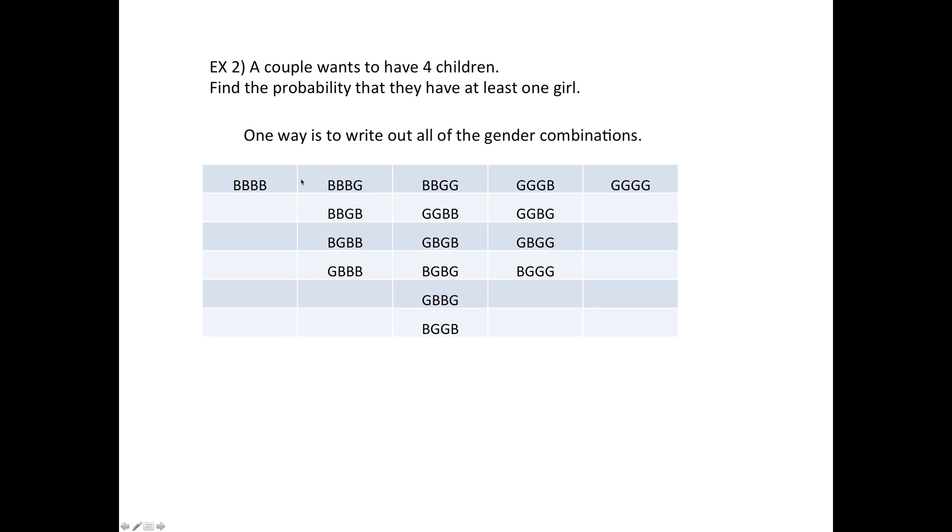Here they are. So here they are having four boys, here they are with three boys and a girl. But then the girl could be the last child, the third child, the second child, or the first.